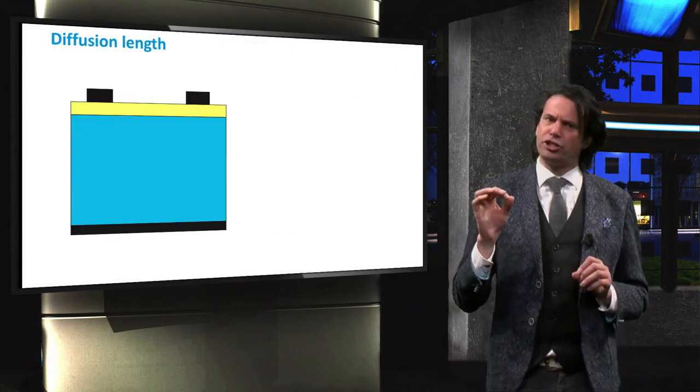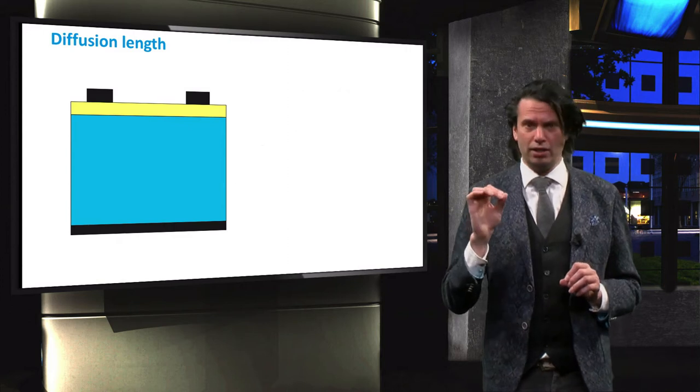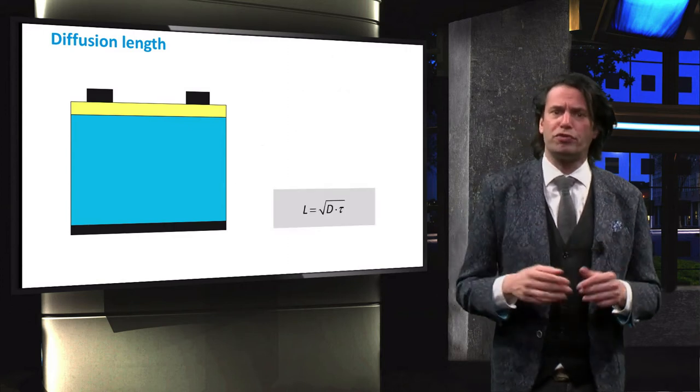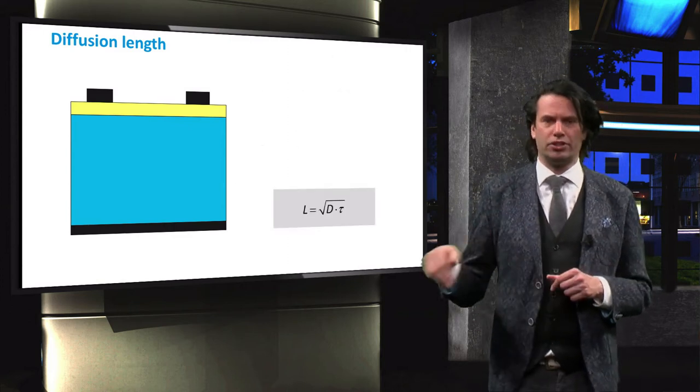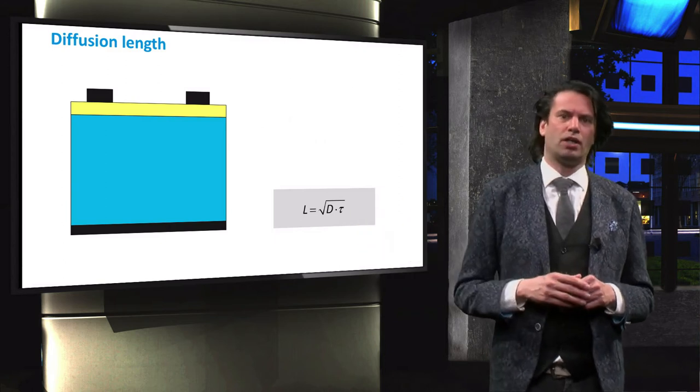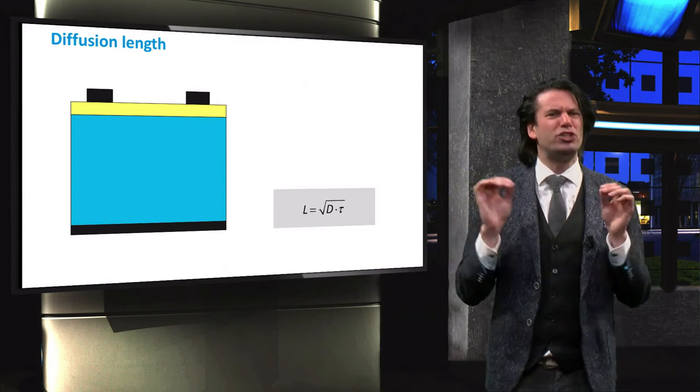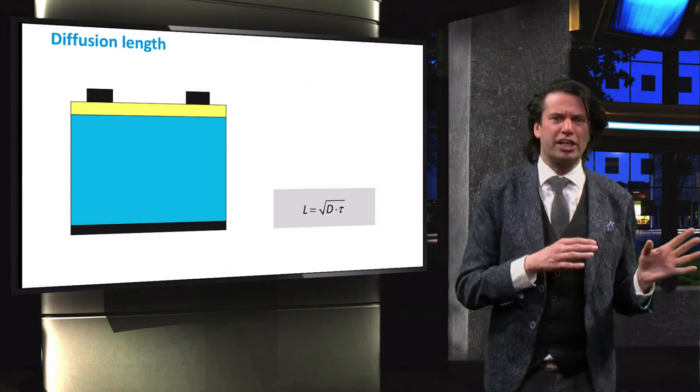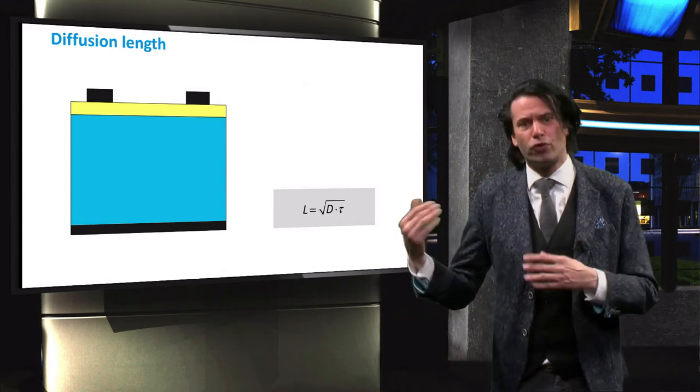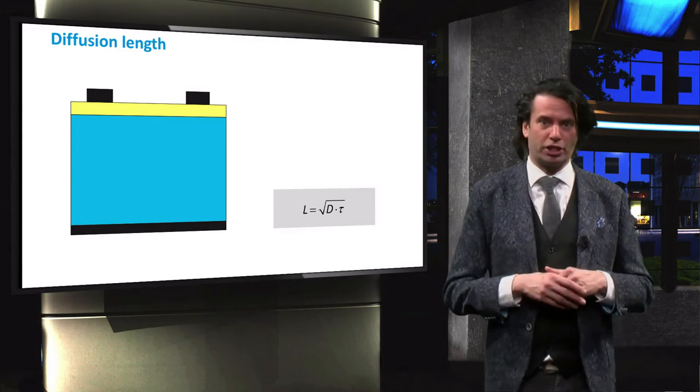The diffusion length of the minority charge carrier indicated by L is equal to the square root of the diffusion coefficient and the carrier lifetime. The diffusion length can be interpreted as the typical distance minority charge carriers diffuse before they recombine with the majority charge carrier.